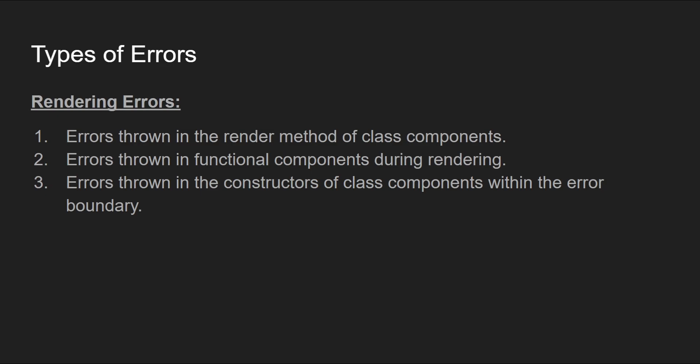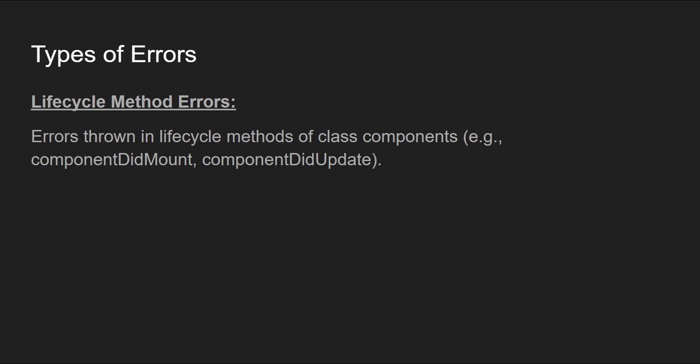We will see what kinds of errors an error boundary is suitable for and what kinds of errors a custom error catching hook is suitable for. First, there are rendering errors, which occur in the render method of class components or when functional components are rendering. They can also be thrown in class component constructors within the error boundary.